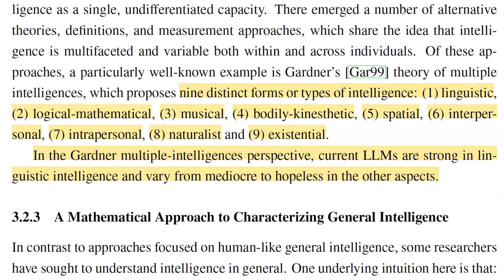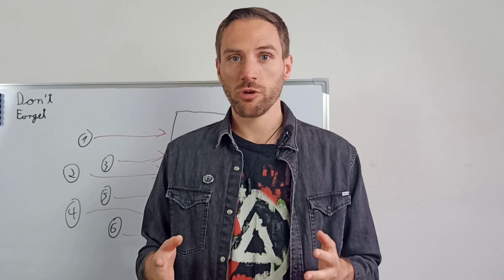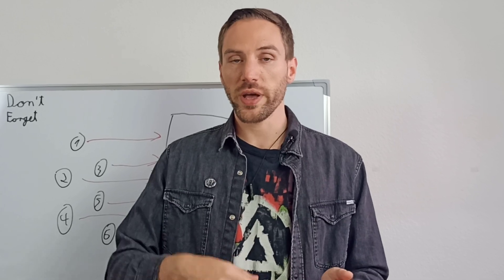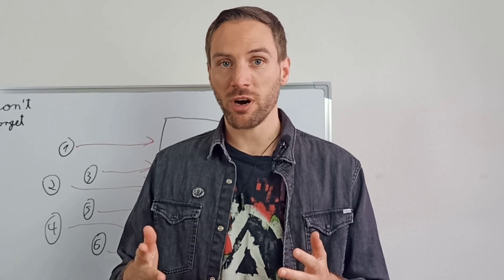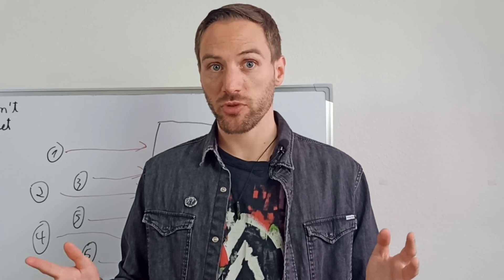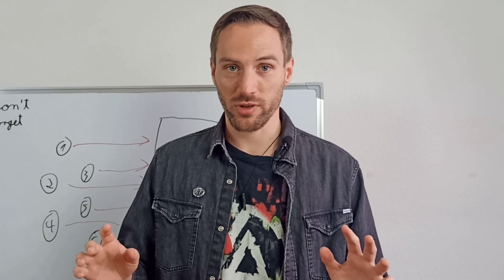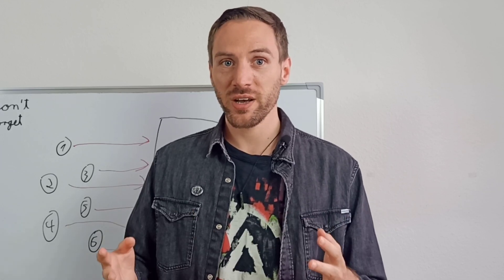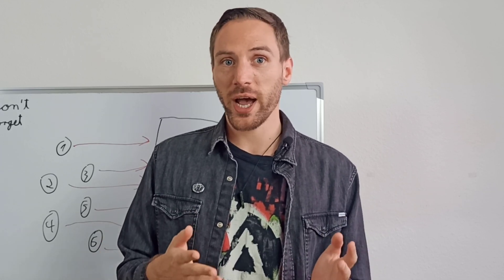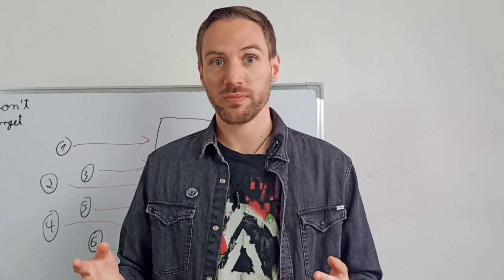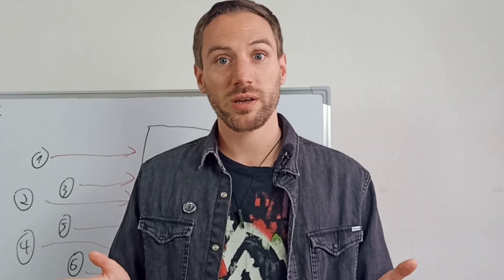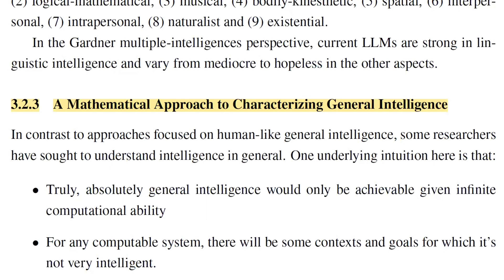In the Gardner multiple intelligence perspective, current LLMs are strong in linguistic intelligence and vary from mediocre to hopeless in the other aspects. According to the psychological approach, we could consider an AI system to be AGI once it has human-like performance and understanding in all nine types of intelligence. An average human is not good at all nine, but the average human is still better than an LLM despite the LLM being much better in the linguistic part.